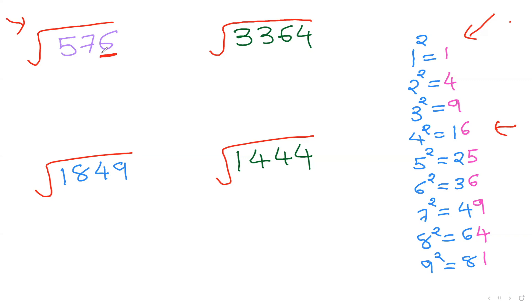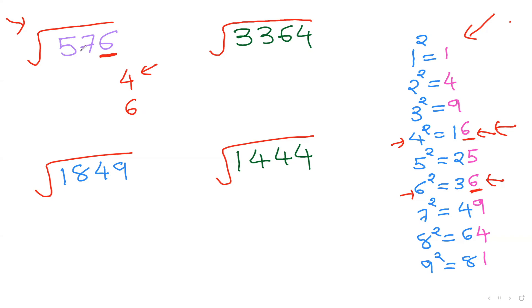Step one: look at the last digit. For example, if it's 6, which square has a 6 at the end? 4² = 16 has a 6, and 6² = 36 also has a 6. So the last digit of the square root is either 4 or 6. To find both options quickly: once you get one number, do 10 minus that number — so 10 minus 4 = 6. That's how you get your two candidate digits.